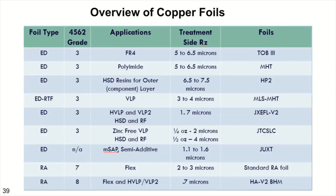When you start getting into high speed designs, the copper roughness truly starts playing an effect, and you can see that it ranges from anything from 5 or 6 microns down to 0.7 micron.